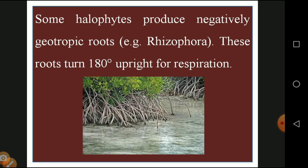Some plants growing in hostile areas, for example mangrove plants, are negatively geotropic because of high salinity — they cannot respire normally. Rhizophora is an example of a mangrove plant whose roots turn 180 degrees to operate for respiration. Due to the high salt content in the soil, they are unable to perform normal respiration, so they absorb oxygen from above the soil. These are called respiratory roots found in mangrove plants.